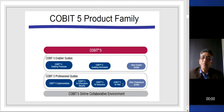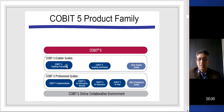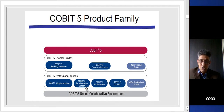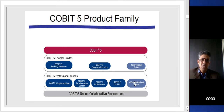The COBIT 5 product family includes enabler guides — enabling processes, enabling information — and other enabler guides. There are also professional guides covering how to implement COBIT 5, what to do for information security, risk mitigation, and more. And there is the COBIT 5 online collaborative environment as well.